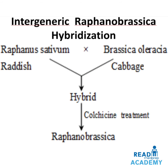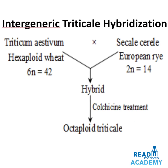In intergeneric Raffanobrassica hybridization, Raphanus sativum (radish) is crossed with Brassica oleracea (cabbage). With colchicine treatment, the Raffanobrassica plant is obtained. In intergeneric Triticale hybridization, Triticum aestivum (a hexaploid wheat, 6N=42) is crossed with Secale cereale (European rye, 2N=14). A hybrid is obtained and with colchicine treatment, octoploid Triticale is produced.